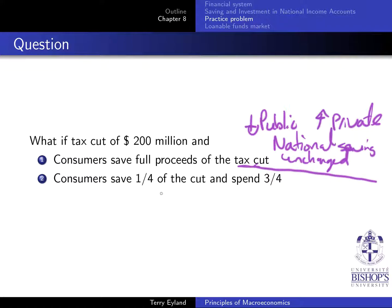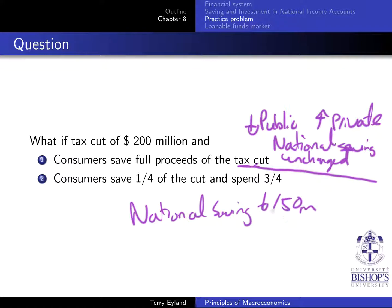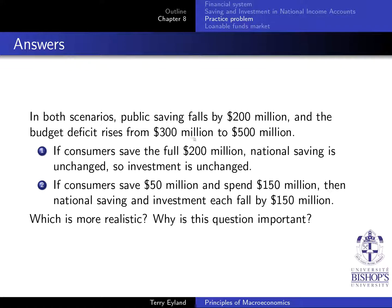But if consumers save a quarter of that amount and spend three quarters, they save $50 million. Public saving drops by $200 million but private saving only rises by $50 million, so national saving must drop by $150 million. They spend that extra $150 million. If there's less national saving, there's going to be less investment as well.